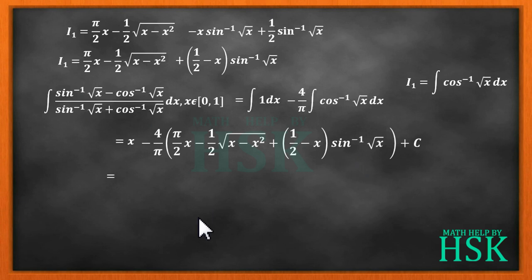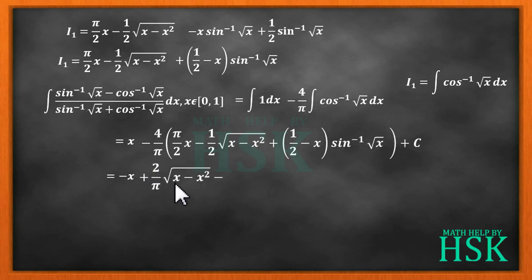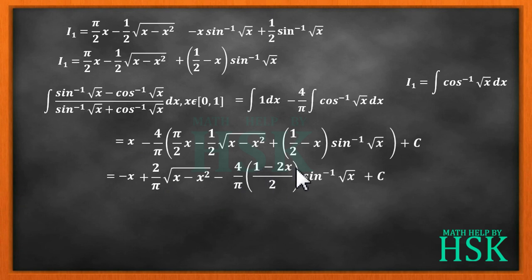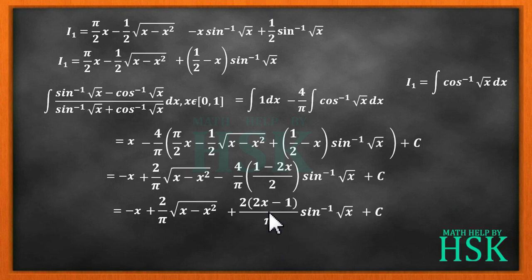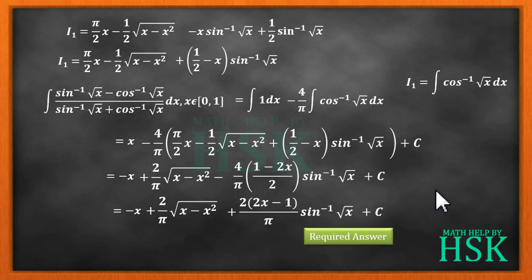After multiplying through by -4/π: the π/2·x term gives -2x, and combined with the +x gives -x as the first term. The second term is (2/π)√(x - x²). The third term combines to give (2(2x-1)/π)sin⁻¹√x + C. So the final answer is: -x + (2/π)√(x - x²) + (2(2x-1)/π)sin⁻¹√x + C.